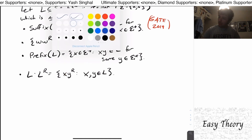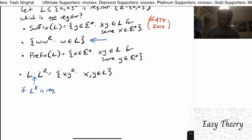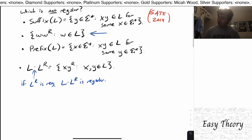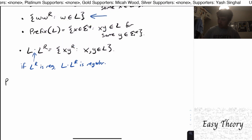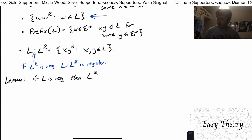We know that regular languages are closed under concatenation, so if L^R is regular, then L concatenated with L^R is also regular, because regular languages are closed under concatenation. So how do you actually show reversal is regular? Here's a lemma: if L is regular, then L^R is regular too.